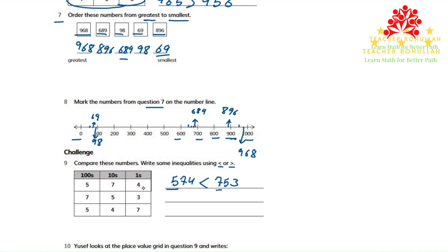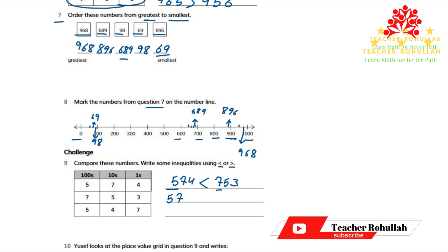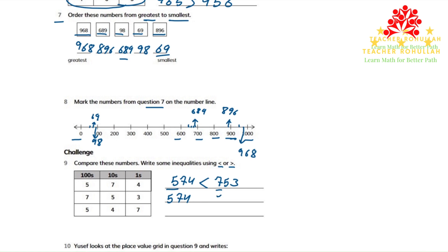To compare the first number with the last number, we can write 574 and 547. In the hundreds place, both of them are the same. But in the tens place, 574 is bigger than 547. So we use this sign and say that 574 is greater than 547.